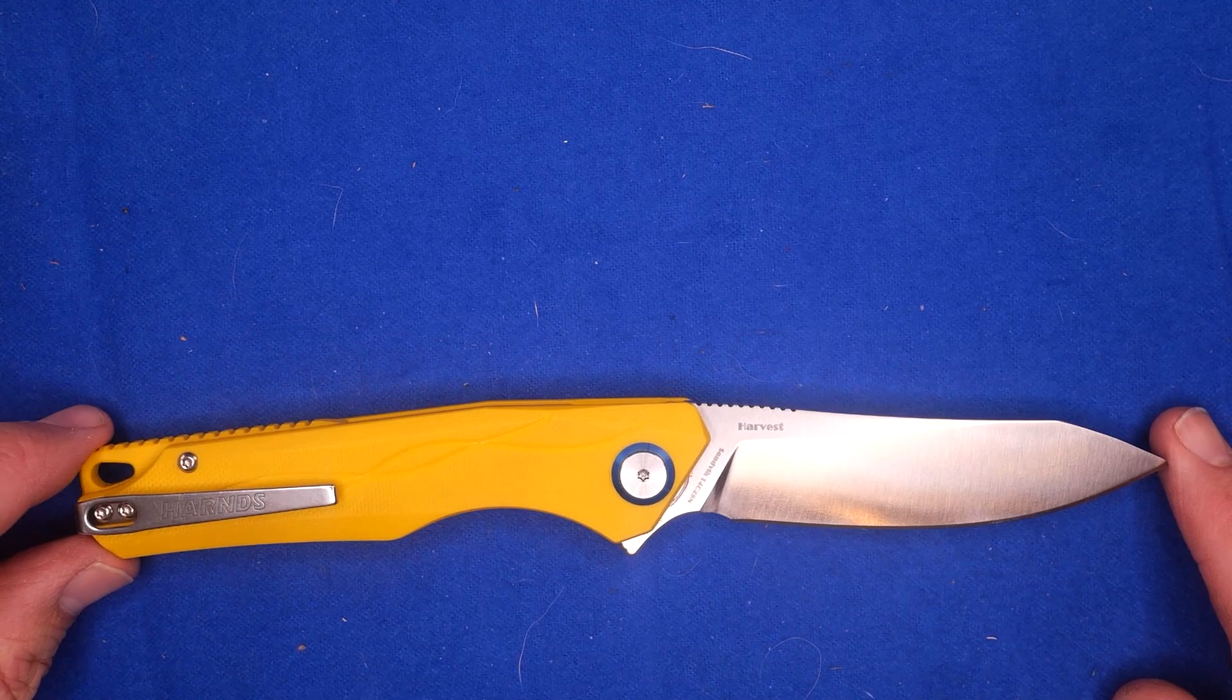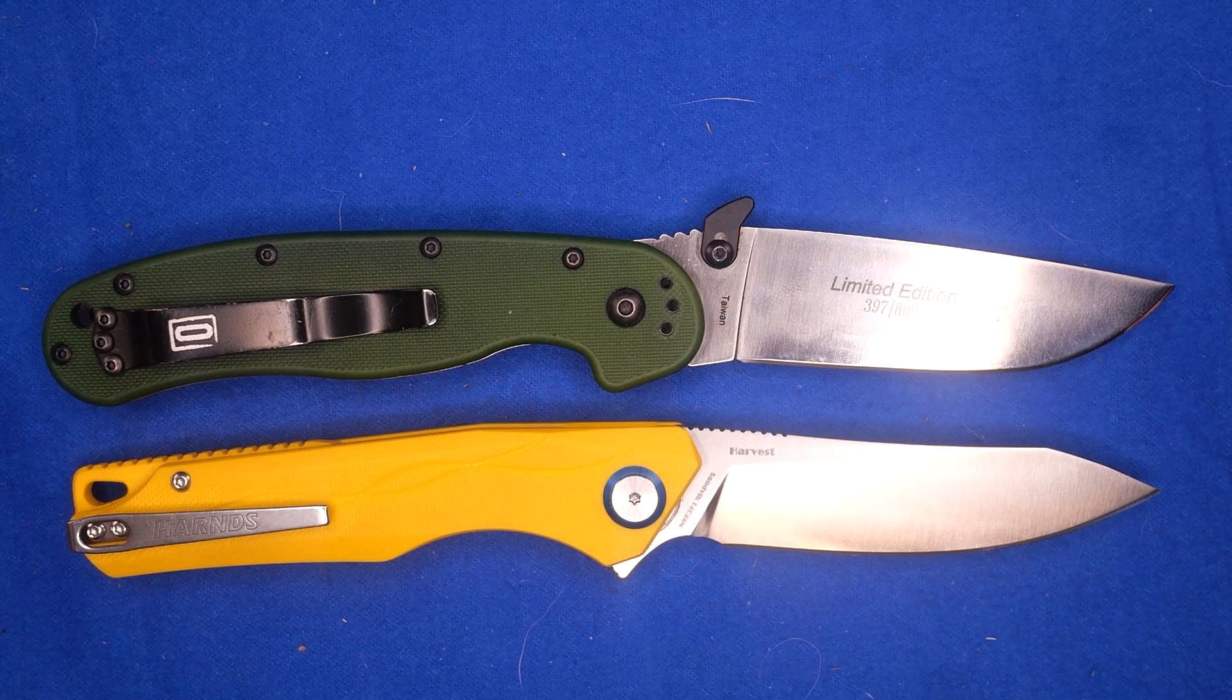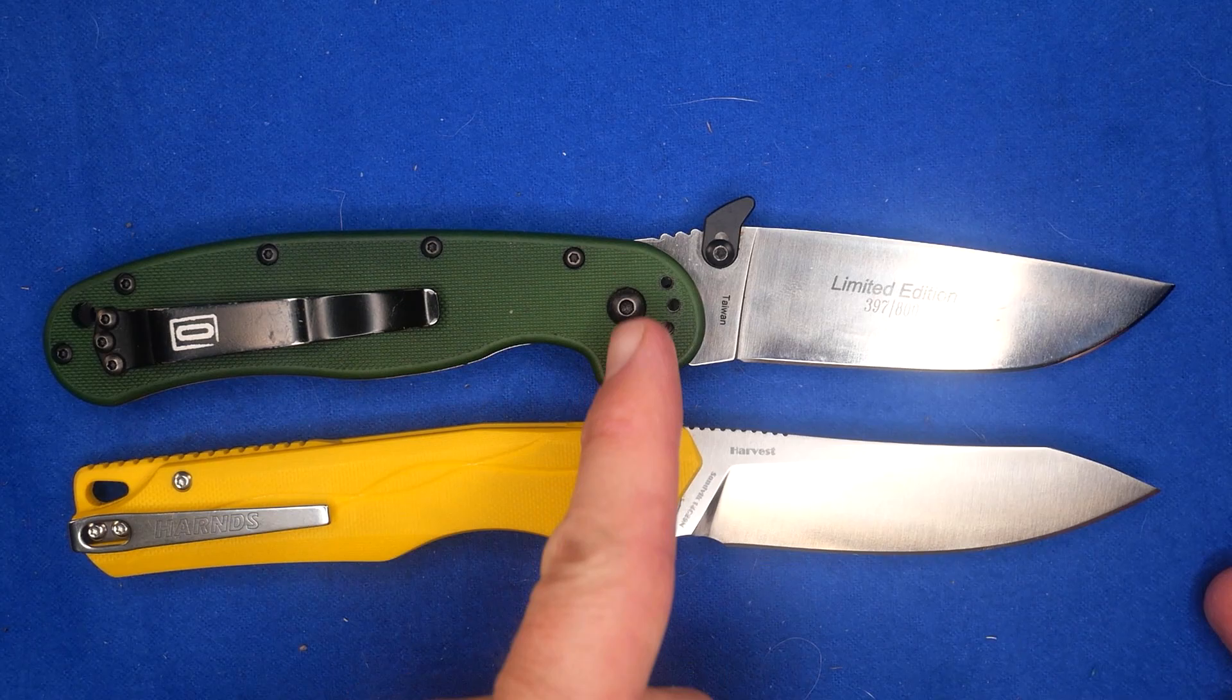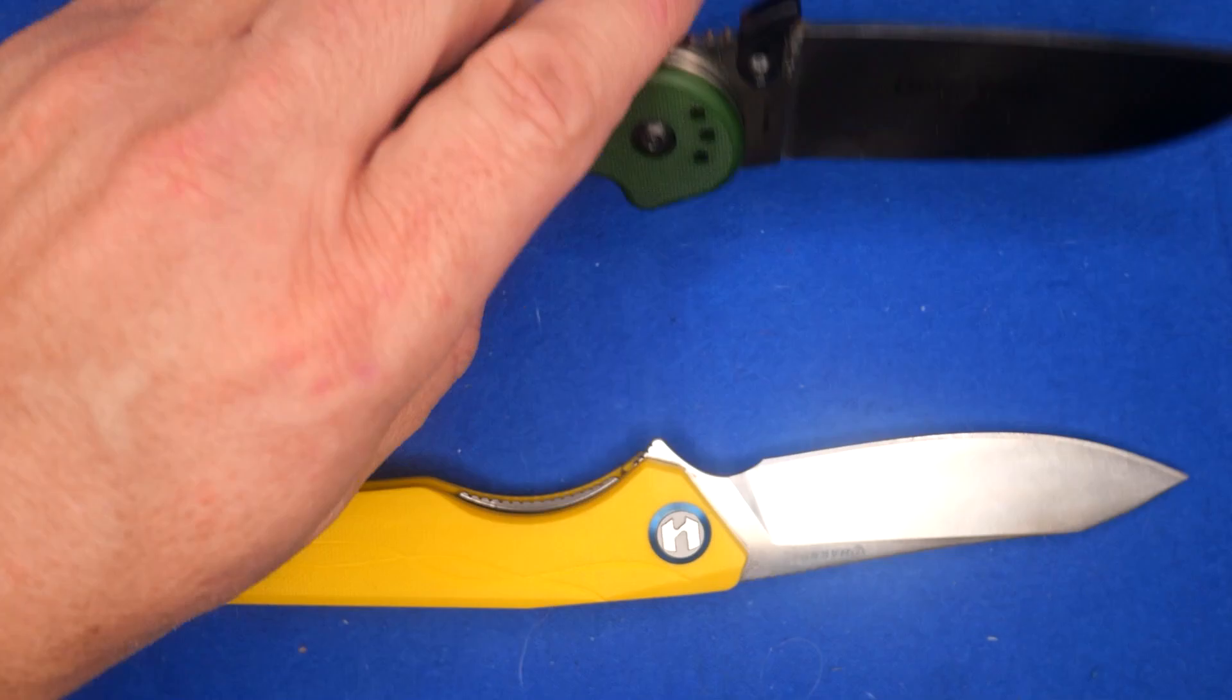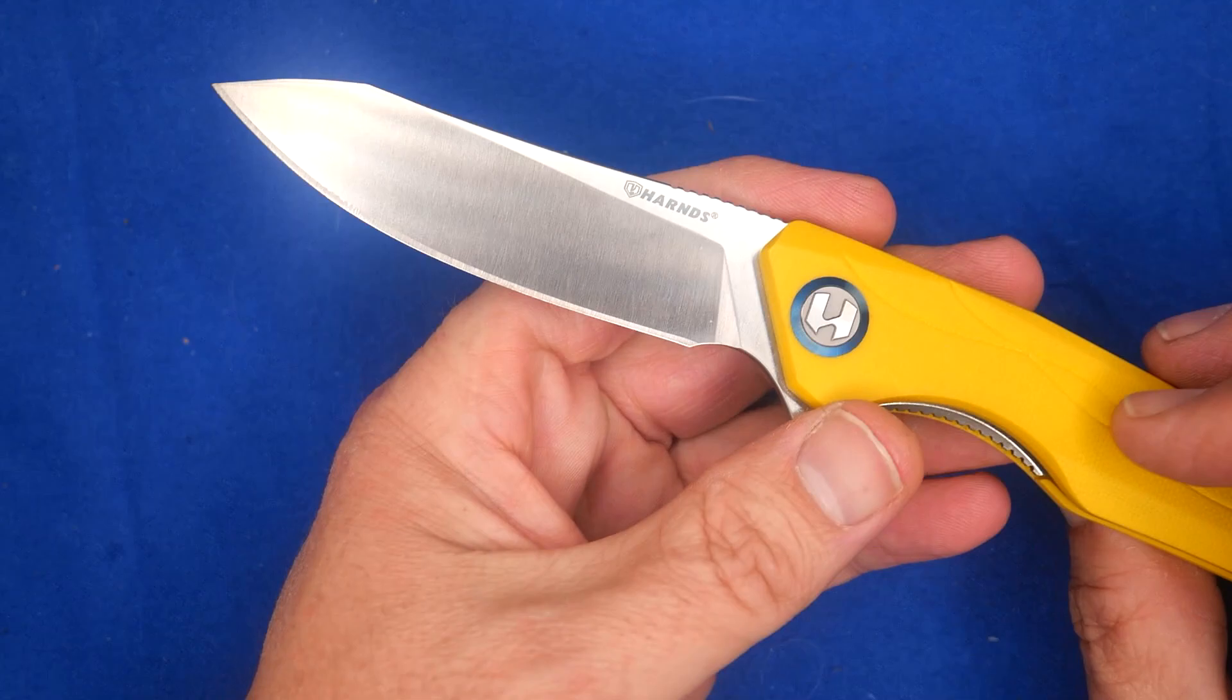Let's begin with our size comparison. There is the knife and here is our Ontario RAT1. Pretty similar in sizes. If you line up the pivot pins, you get a little more cutting edge, but very much the same length and size. It's not a small folder.